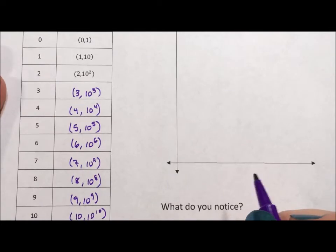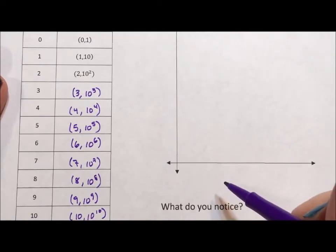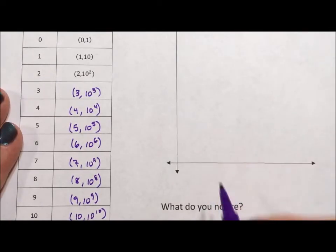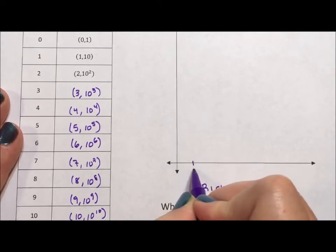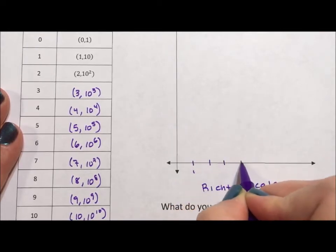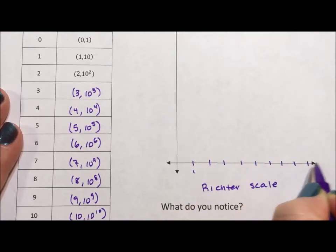Okay, and what we want to do is we want to graph these. And so I'm going to do the Richter scale on the bottom because it's always good to make sure you label your graph, especially your axes. And so this is going to be 1, 2, 3, 4, 5, 6, 7, 8, 9, 10.